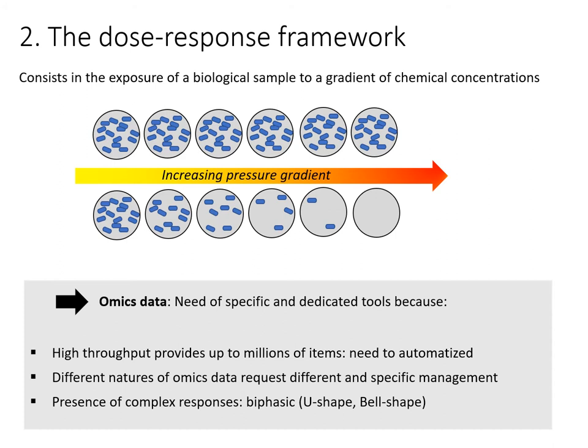We also have different natures of omic data. For example, with metabolomic data we can have area under the curve, while for transcriptomics we can have read counts or fluorescence, and that needs specific management.